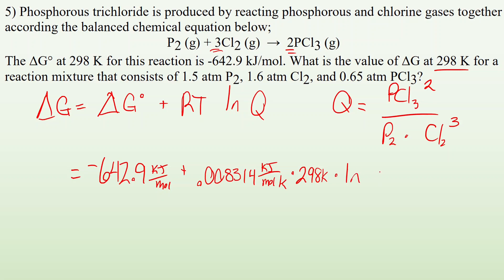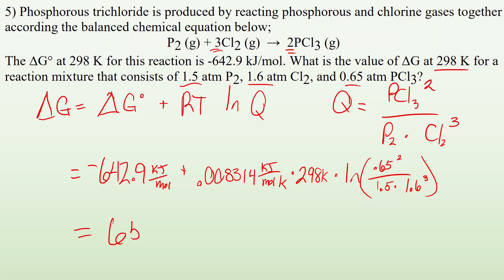Plugging in: delta G0 is negative 642.9 kilojoules per mole, plus 0.008314 kilojoules per mole kelvin times 298 K, times the natural log of Q. PCl3 pressure is 0.65 squared, divided by P2 pressure of 1.5 times Cl2 pressure of 1.6 cubed. Rounding to two significant figures based on the given pressures, I get negative 650 kilojoules per mole as my final answer. Hope you found that helpful — see you in class!